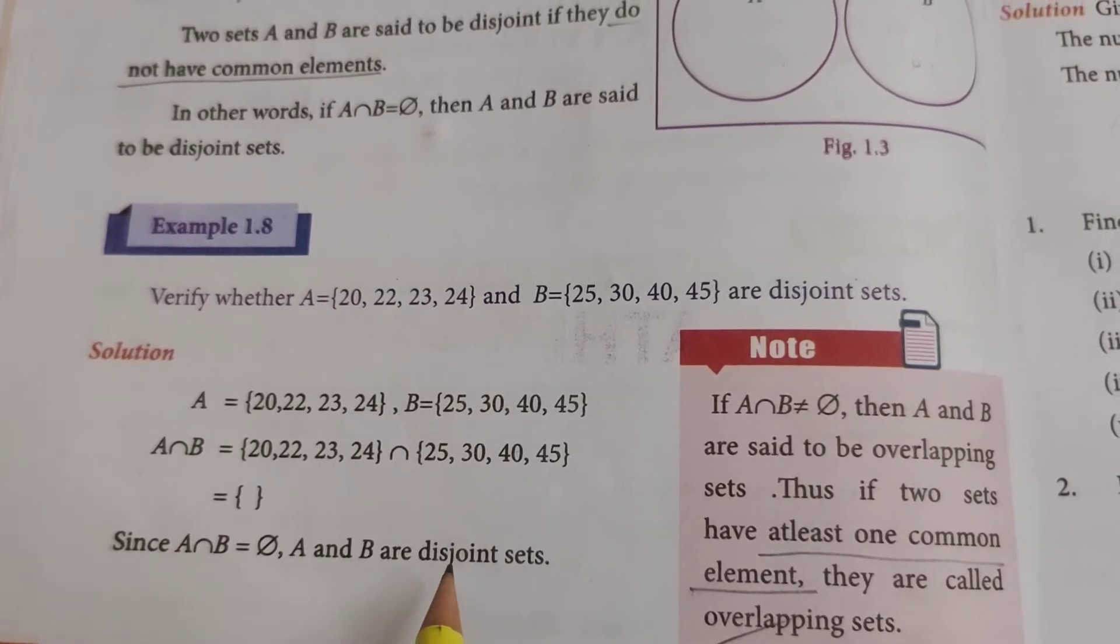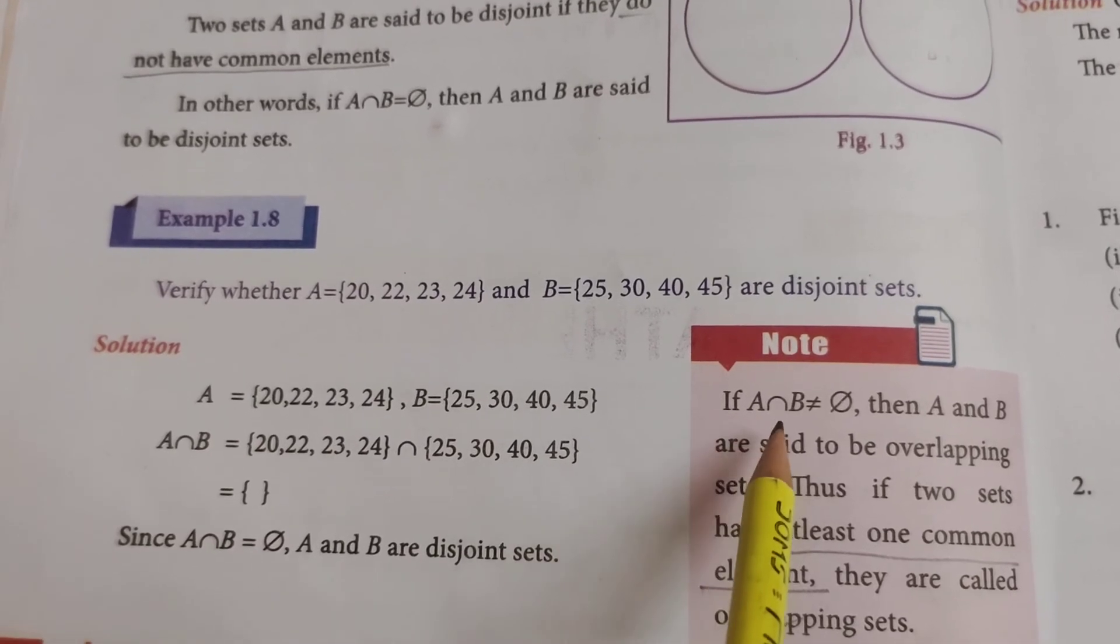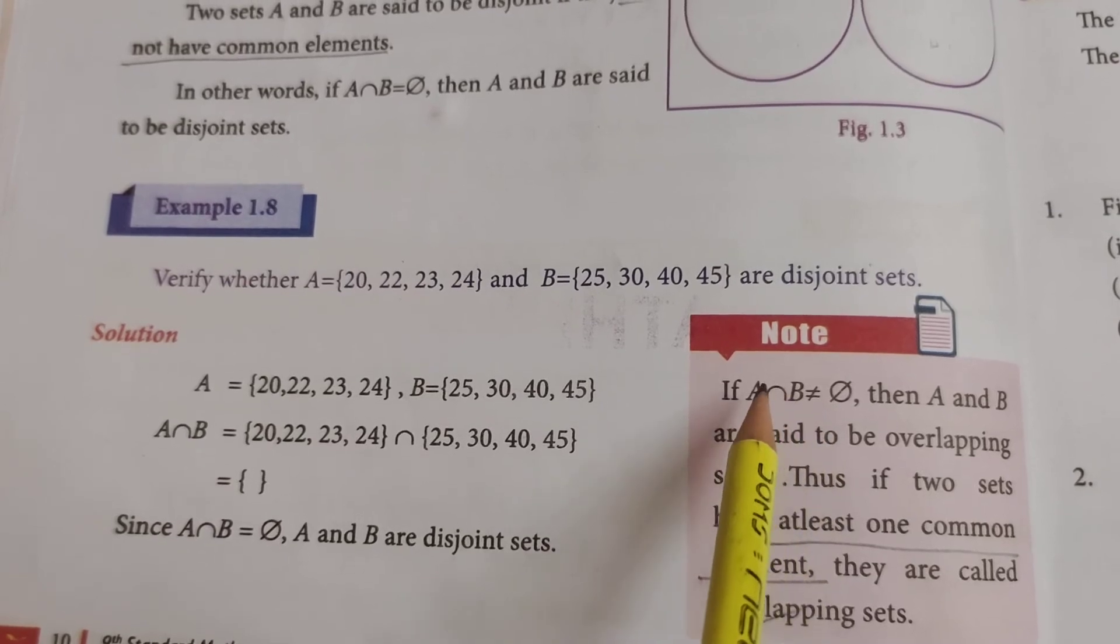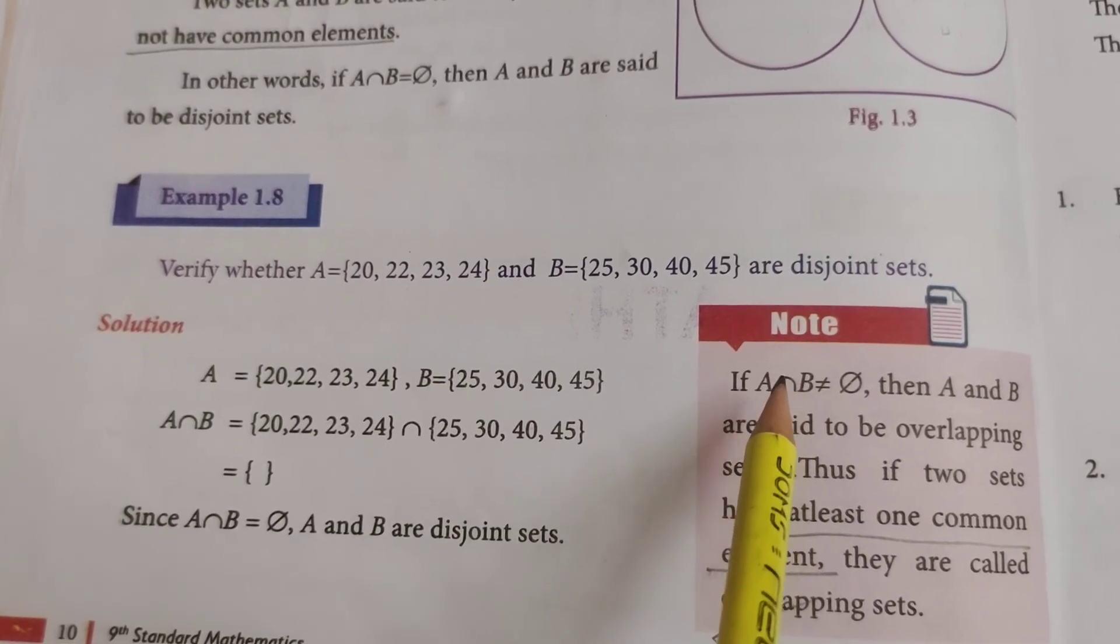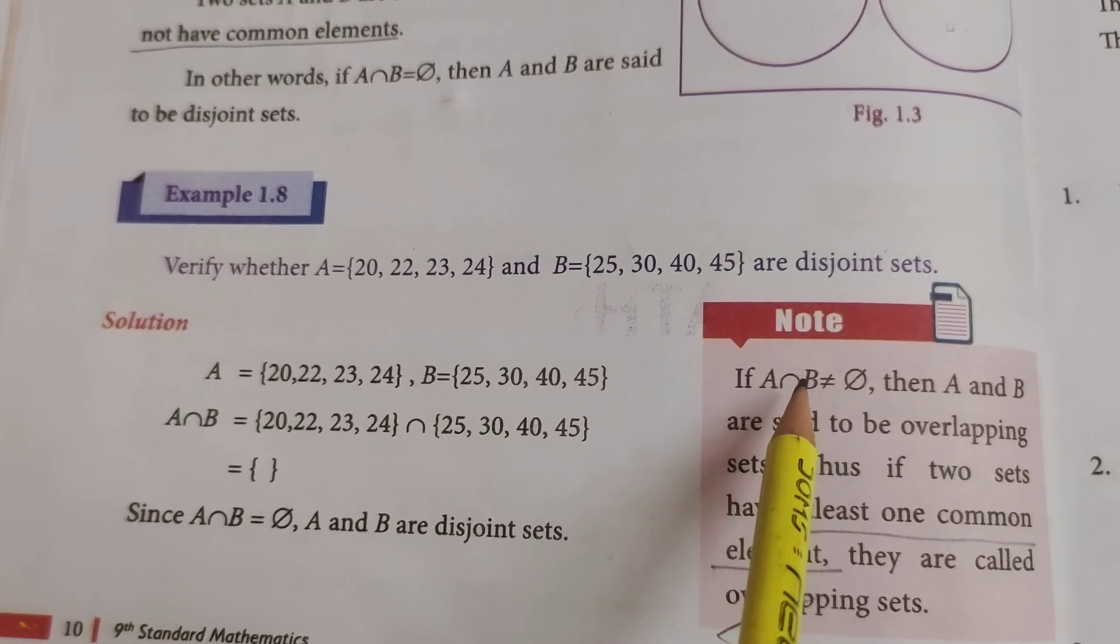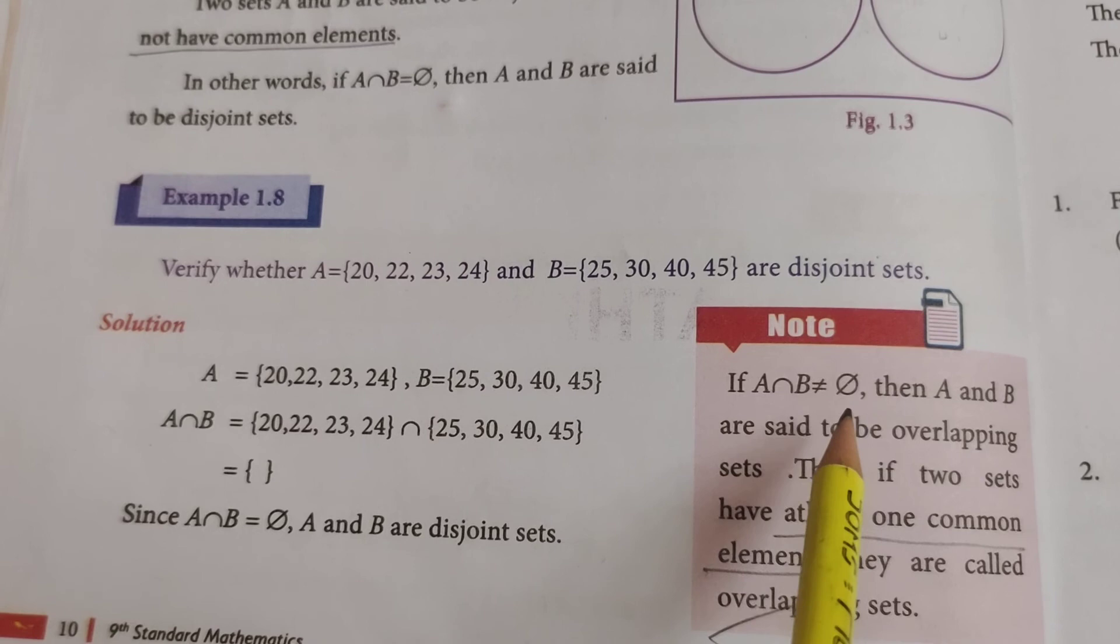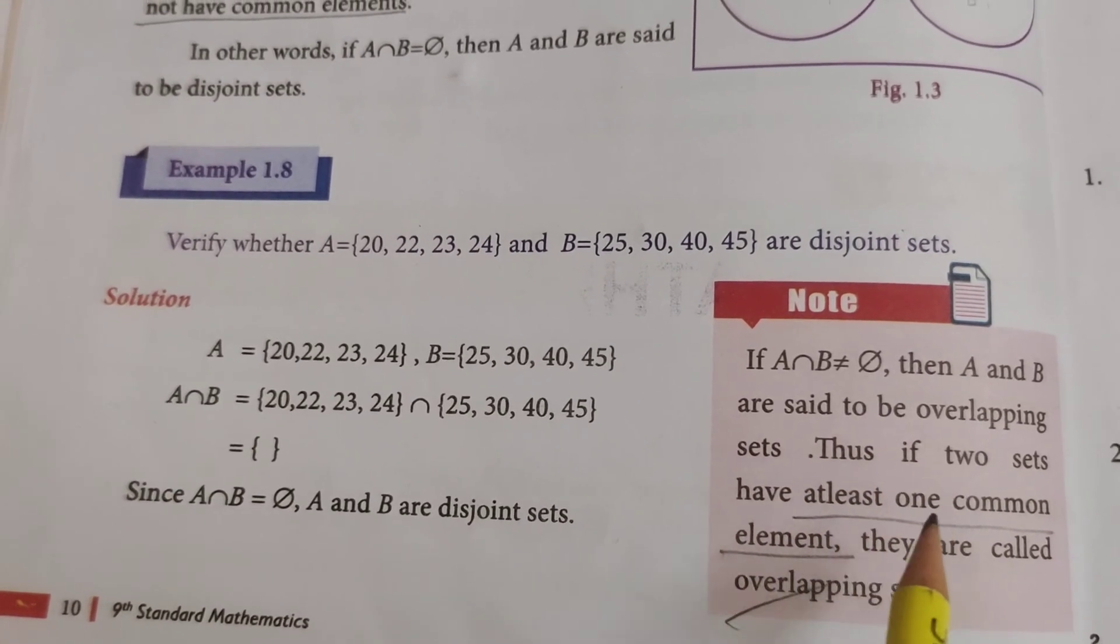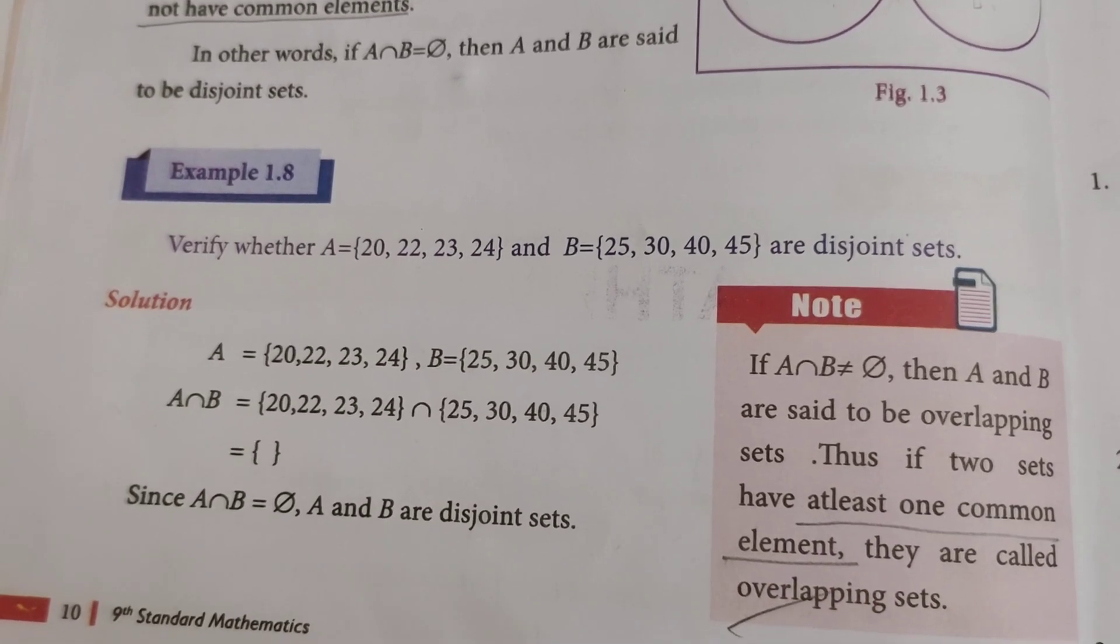By keeping this in mind, we have one more set. If A intersection B is not equal to Φ, that means if A and B has any one or two or three, whatever may be, but if it has any common elements, then A and B are said to be overlapping sets. Thus, if two sets have at least one common element, they are called overlapping sets.